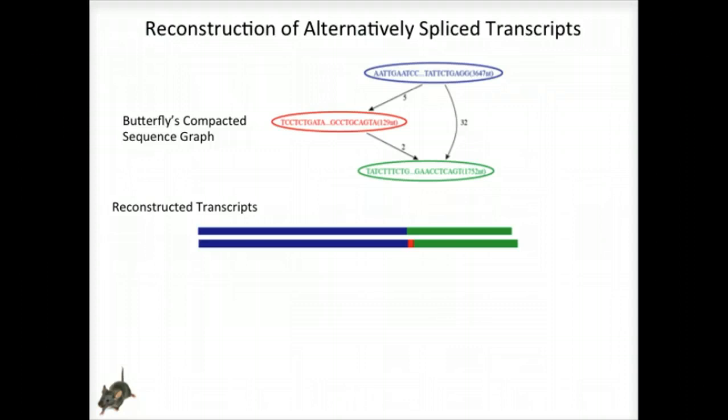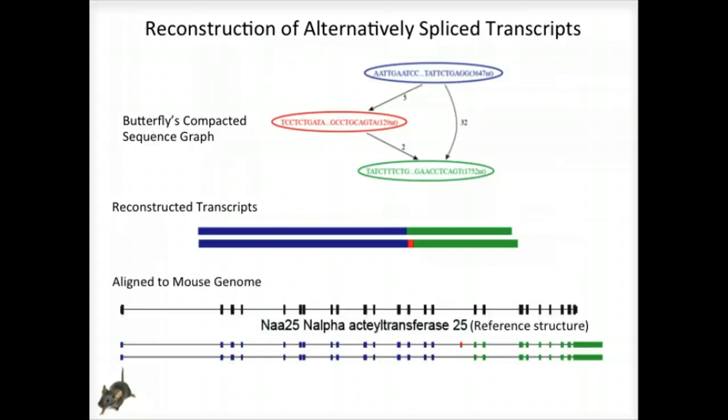By traversing the alternative path through the red node, we generate another transcript sequence. This second transcript shares the blue and green segments but contains an additional internal red segment. By mapping the transcripts to the reference genome sequence, we can see that the inserted sequence actually corresponds to a cassette exon that is alternatively spliced and novel given that it wasn't found in the reference transcript structure.